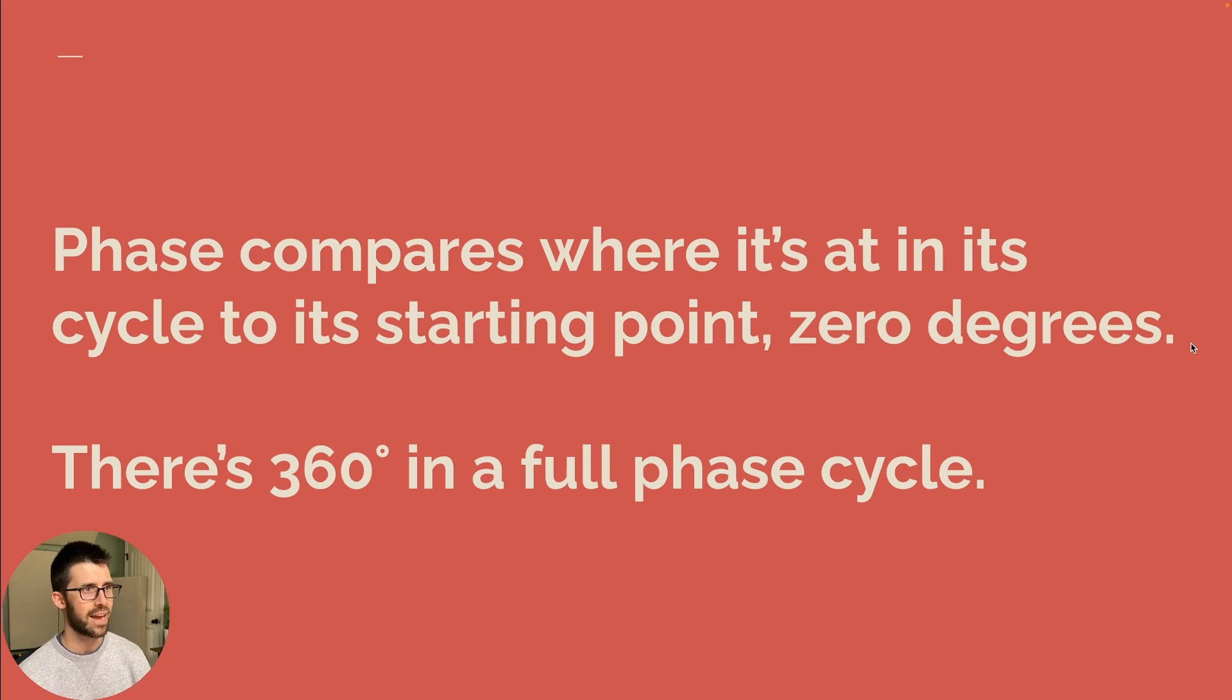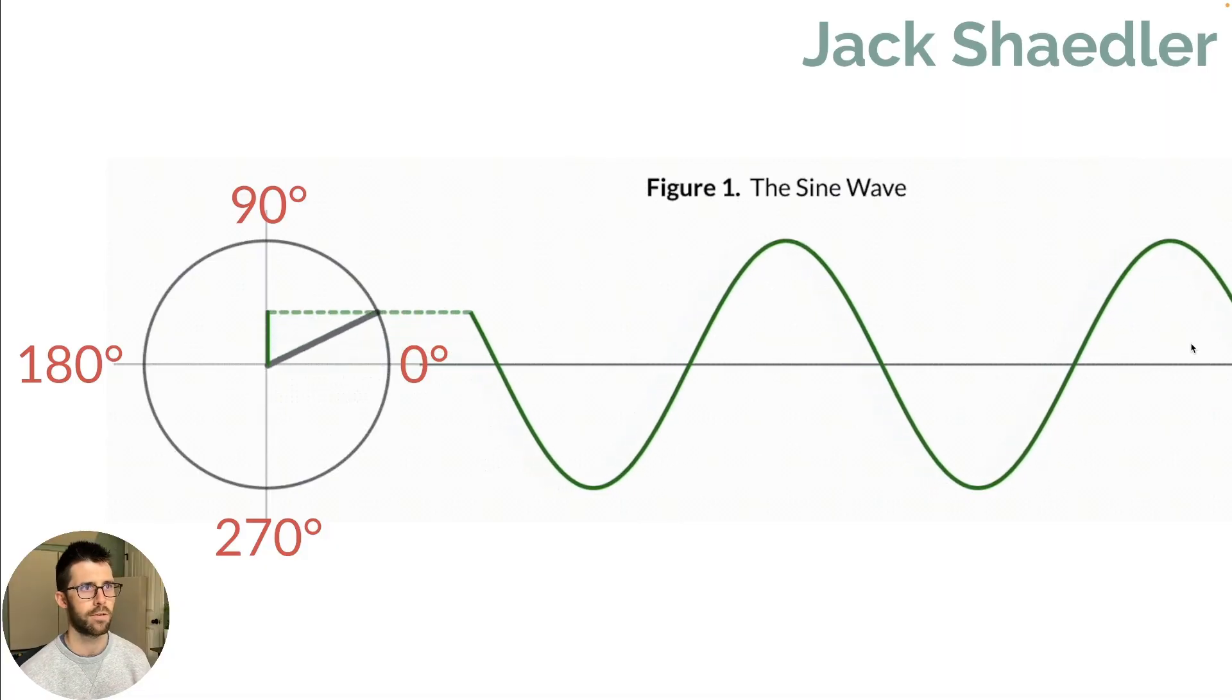So we know phase describes cycles and how we measure that is in degrees. So phase compares where it's at in its cycle to its starting point, zero degrees. And then there's 360 degrees in a full phase cycle. Let's have a visual reference for this now.